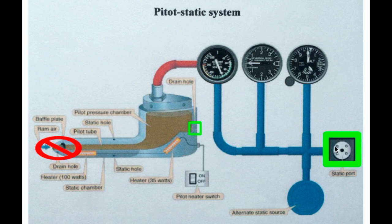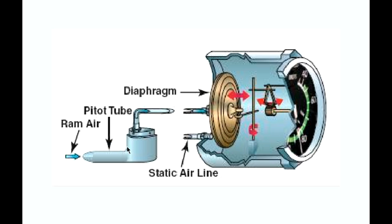If the front inlet is blocked, the main airstream that normally acts as pressure within the diaphragm of the airspeed indicator is no longer available. What we still have is the drain hole, which is still open and receiving ambient outside air pressure — the same as the static ports. As I'll show you from inside the instrument, if the front inlet is blocked there is no more air pressure acting on the diaphragm. The drain hole now receives the same pressure as the static ports.